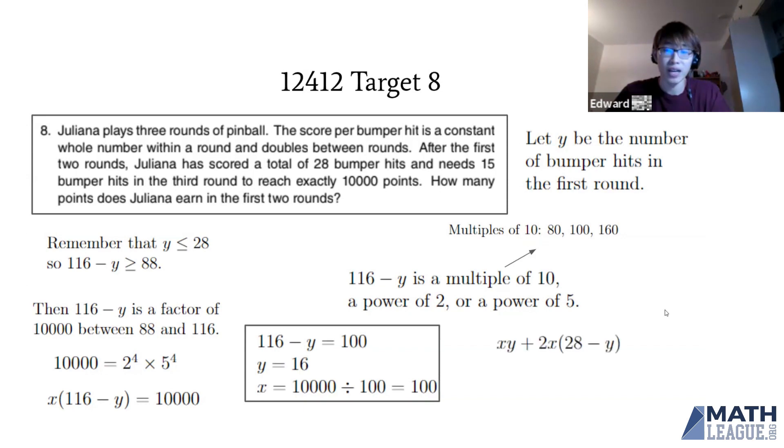Now we find how many points she scored in the first two rounds. Plugging in our values, we get 4,000 points in the first two rounds. That's the answer to Target 8.